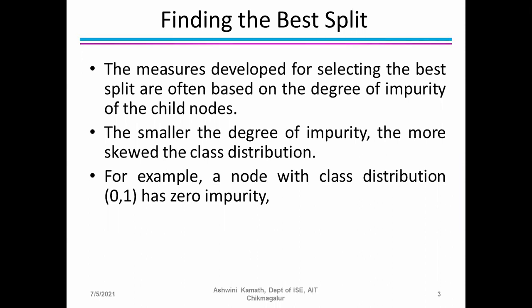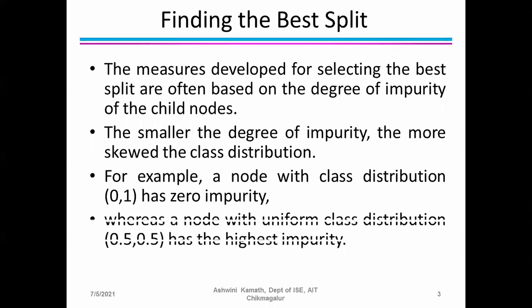If we have two classes such as 'yes' or 'no', and a node shows 0 for yes and 1 for no, there is no impurity — no confusion. It belongs clearly to 'no'. Whereas a node with uniform class distribution — 50% yes and 50% no — has the highest impurity. It is very confusing whether the example belongs to class 1 or class 2, making it very difficult to predict. That gives us the highest impurity.